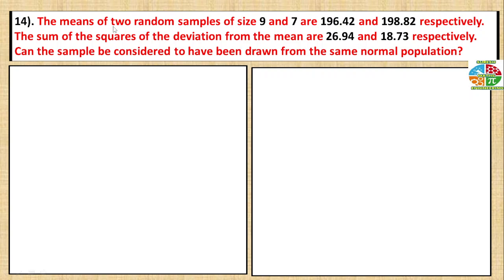The means of two random samples of size 9 and 7 are 196.42 and 198.82 respectively. The sum of the squares of the deviation from the mean are 26.94 and 18.73 respectively. Can this sample be considered to have been drawn from the same normal population?